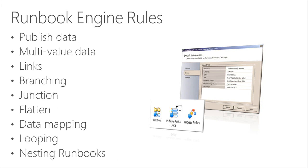The flatten concept relates to multi-value data. Going back to the SQL Server example — if you query a database and get multiple results, by default the next activity runs once per result. If you don't want that, you can use the flatten property on the activity to produce a single output. There are several options: you can separate values with line breaks, with a specific character you define, or use CSV format.